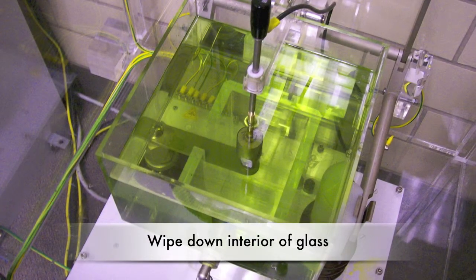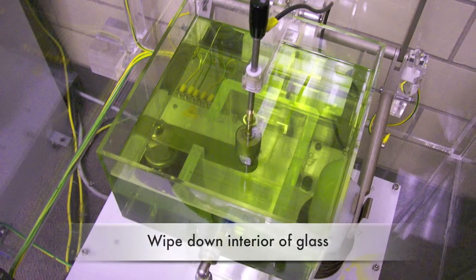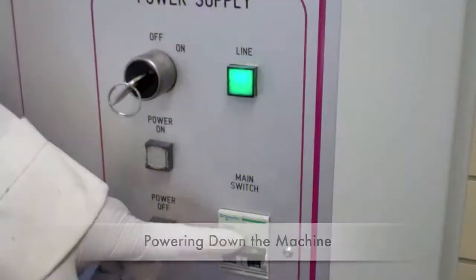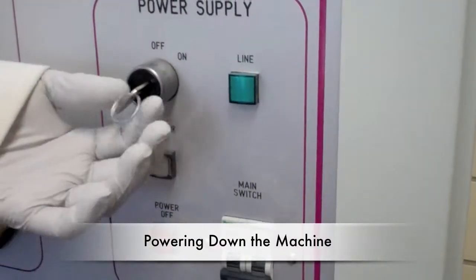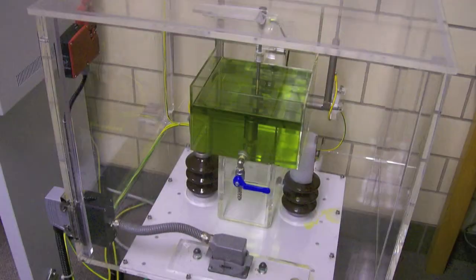After your runs are completed, wipe down the interior of the oil bath housing where oil may have dripped. Turn off the main switch and turn the key to the off position before you remove it.